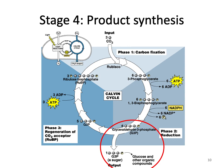The last stage of the Calvin cycle is product synthesis. To complete the process, the cycle must take place three times, fixing three molecules of carbon dioxide. When three carbon dioxide molecules enter the cycle, six G3P molecules are made. One molecule of G3P will exit the cycle and will be used to make glucose or any other organic compound, while the other five will be recycled to regenerate three molecules of RuBP.